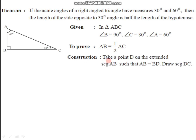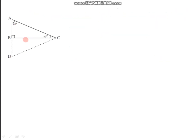To prove this, we need to do one construction. We take a point D on the extended segment AB such that AB is congruent to BD, and then we draw segment DC. After doing this construction, we get a new triangle in the figure.